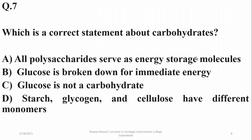Question 7: Which is a correct statement about carbohydrates? Not all polysaccharides are energy storage molecules — there is a structural role such as cellulose and chitin. Glucose is broken down for immediate energy — yes, that is true. Glucose is not a carbohydrate — false. Starch, glycogen, and cellulose having different monomers — no, the monomer is the same: glucose. So the right option is: glucose is broken down for immediate energy.